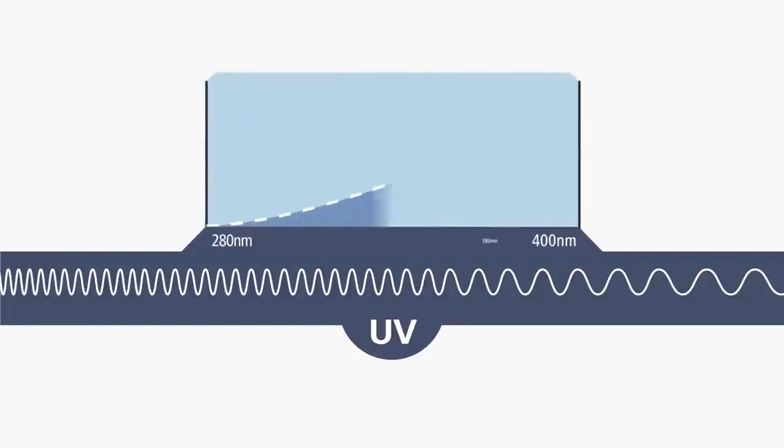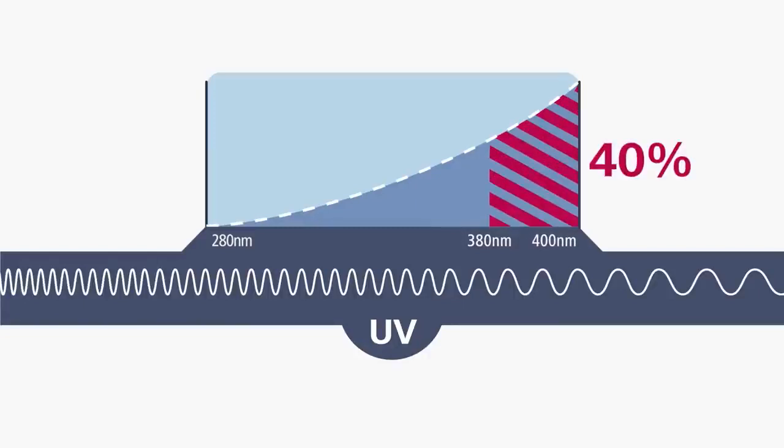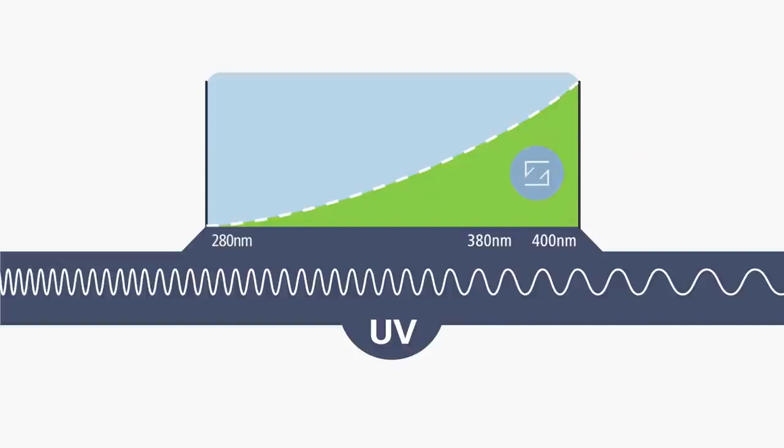The interval between 380 and 400 nanometers is much more intense and is actually responsible for 40% of the total amount of solar UV irradiance. And that's why Zeiss raised the standards of protection to 400 nanometers.